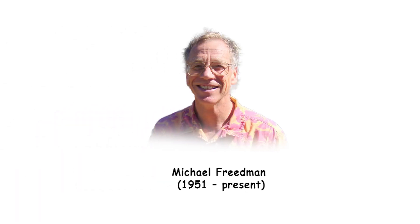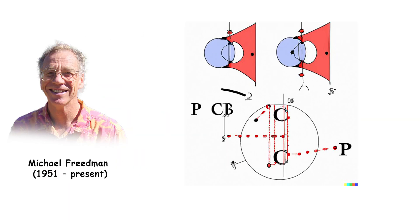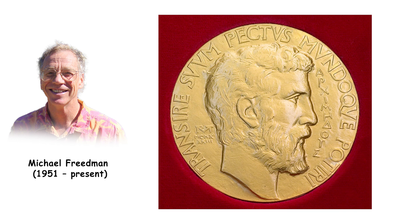Michael Freedman is an American mathematician recognized for his work in topology, particularly for proving the four-dimensional Poincaré conjecture. Freedman's proof demonstrated that any smooth, simply connected, closed four-dimensional manifold is homeomorphic to the four-dimensional sphere. He was awarded the Fields Medal in 1986 for this achievement.